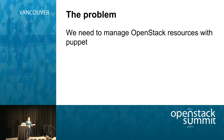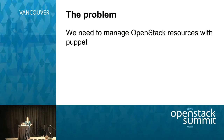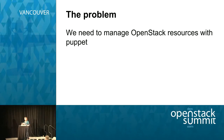In very general terms, the problem we're trying to solve is we need to manage OpenStack resources with Puppet, using the Puppet DSL somehow. The Puppet Modules are going to deploy OpenStack packages, configure the services, and then as part of that automation they also need to set up things within OpenStack — like Keystone users and endpoints, upload Glance images, or set up Neutron networks. We want to do it with Puppet.